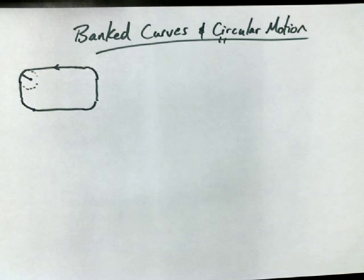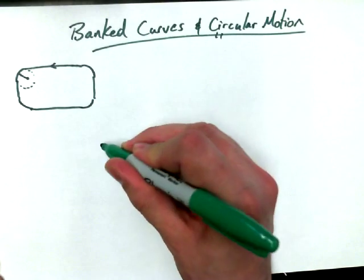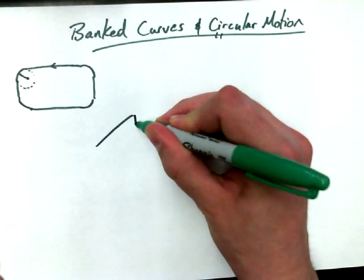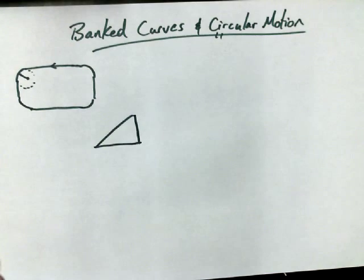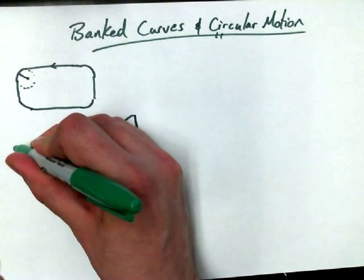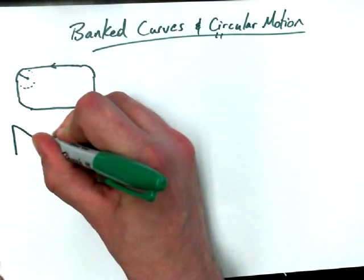Or at least the people in Daytona and all these Indy race car type places wanted to minimize that. So we've also talked previously about inclined planes, and that's where they went with it. They said, what if, thinking about an inclined plane, we talk about having what we'd like to call a banked curve?